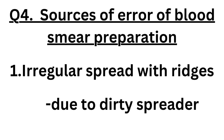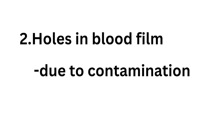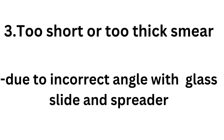Question number four: sources of error in blood smear preparation. Smear preparation errors will affect the quality of the smear. First: irregular spread with ridges — due to a dirty spread slide. Second: holes in blood film — due to contamination. Third: too short or too thick smear — due to incorrect angle with the glass slide and spreader. The angle should be 30 to 45 degrees.